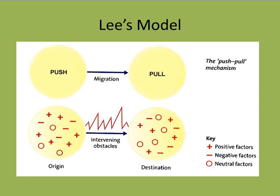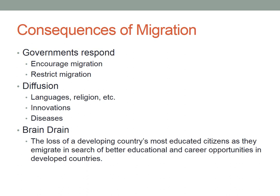The simple push-pull mechanism — you're pushed from your source and migrate to the area you're pulled to — is far more complicated in reality. There are positives, negatives, and things that are neutral and hard to leave. When you move, it's not smooth — there are intervening obstacles — and this doesn't even factor in intervening opportunities that might redirect migrants. The destination, while it has positive pull factors, also has negatives and neutral characteristics that make it more challenging. Lee's model is a model, but reality is far more complicated.